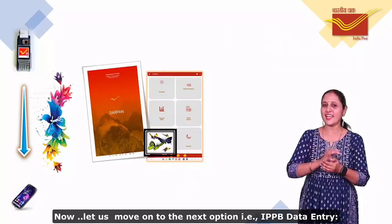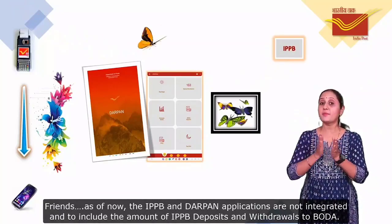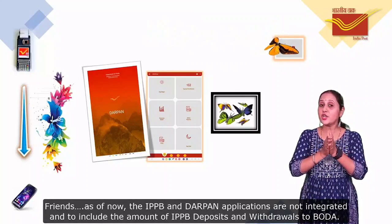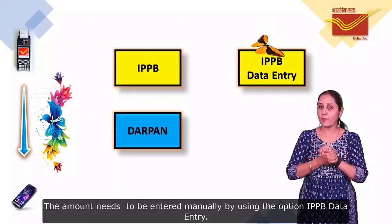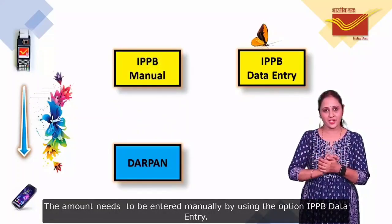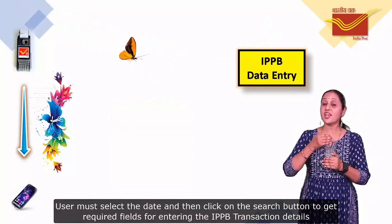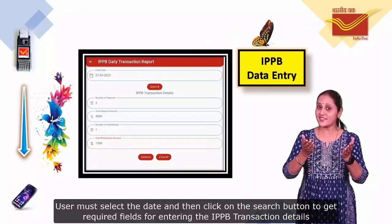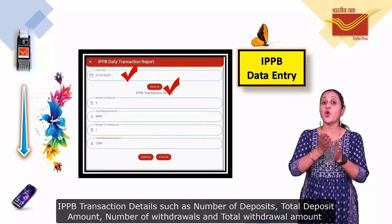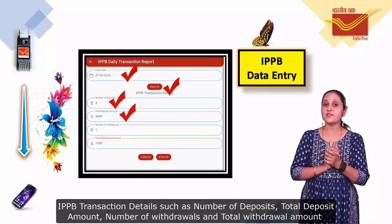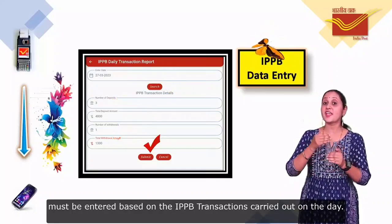Now let us move on to the next option, that is IPPB Data Entry. As of now, the IPPB and the DakPoint applications are not integrated. To include the amount of the IPPB deposits and withdrawals in the Boda, the amount needs to be entered manually using the option IPPB Data Entry. The user must select the date and then click on the search button to get the required fields for entering the IPPB transaction details, such as number of deposits, total deposit amount, number of withdrawals, and total withdrawal amount, based on the IPPB transactions carried out on that date.